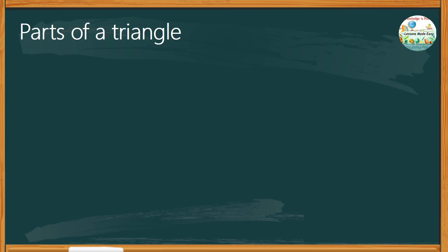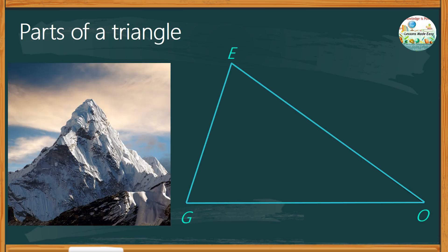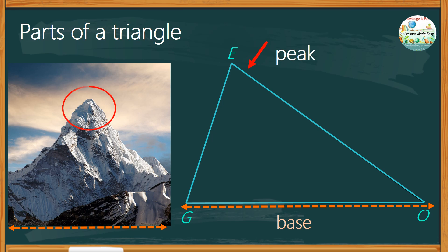Parts of a triangle. Basically, a triangle is just like a mountain where the part that is parallel to the ground is called the base. Opposite the base is the peak, or the highest point of the mountain. In this given example, the peak is angle E and it is also called the peak angle. The peak angle is always opposite the base.